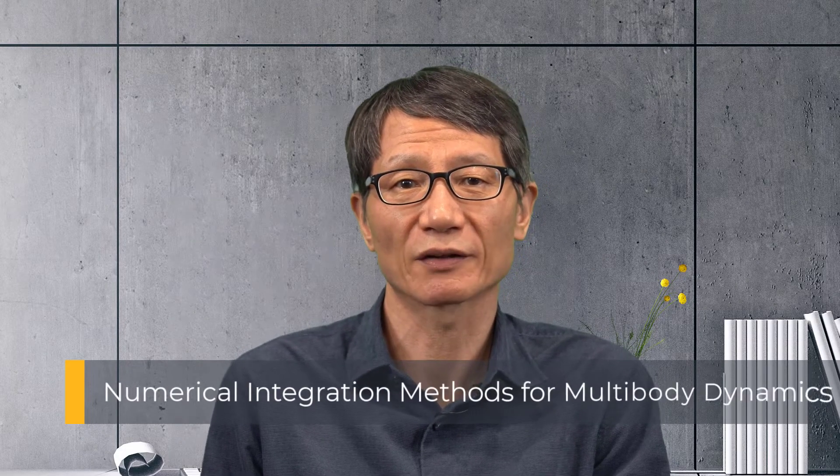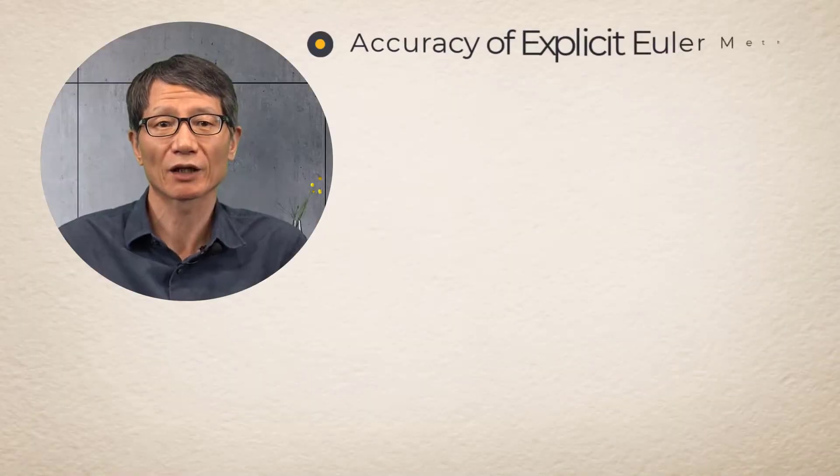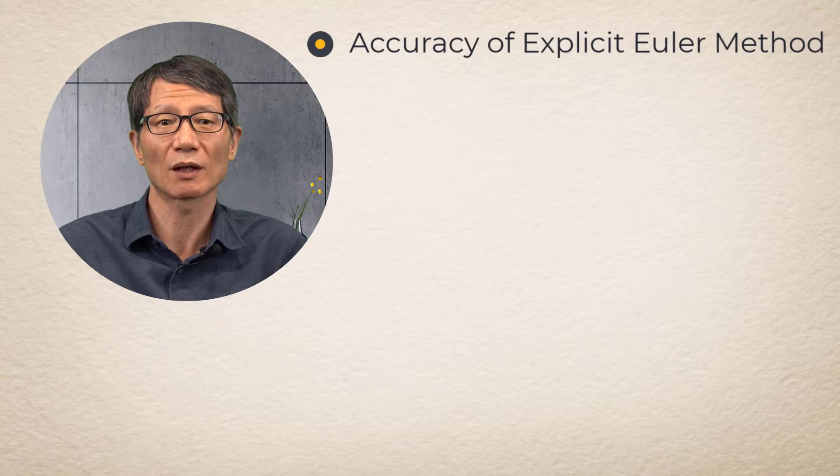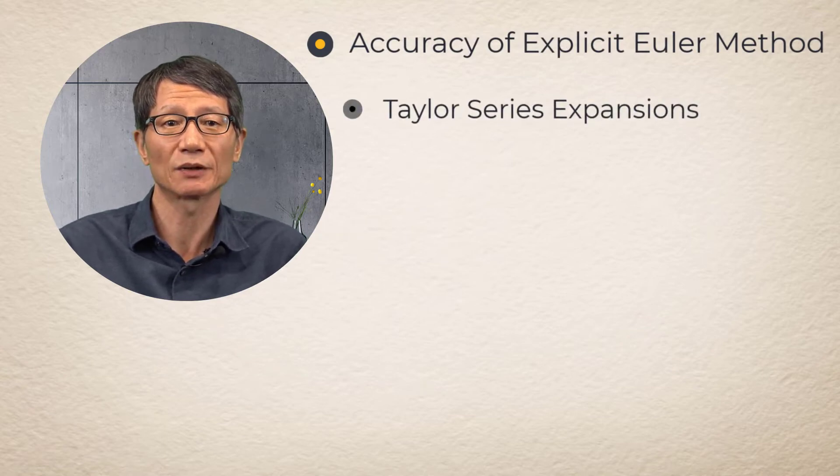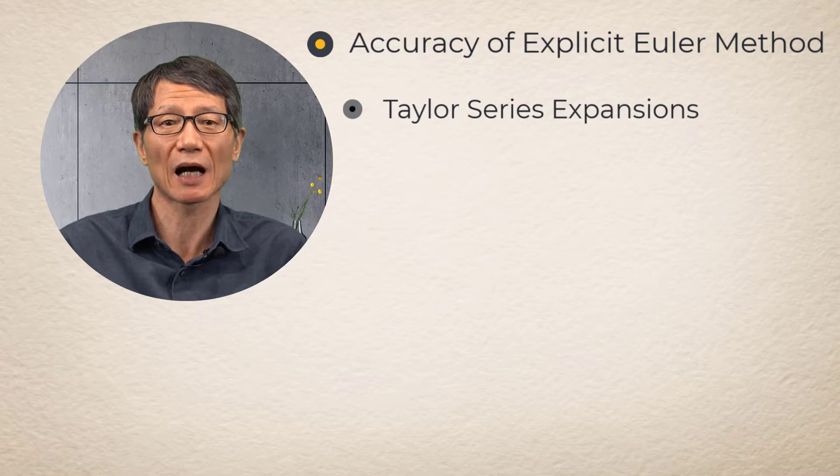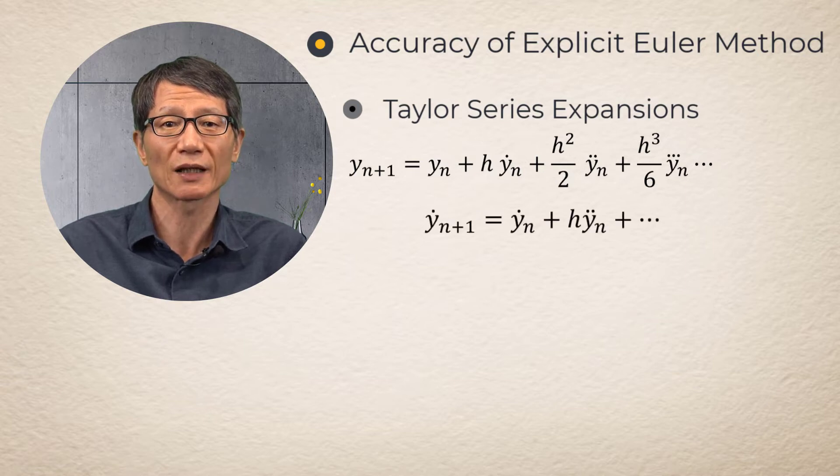Numerical Integration Method for Multibody Dynamics. Accuracy of Explicit Euler Method. Taylor expansion of an integration variable can be expressed in time domain as follows. The second-order Euler integration method is obtained by truncating all terms after the third term.